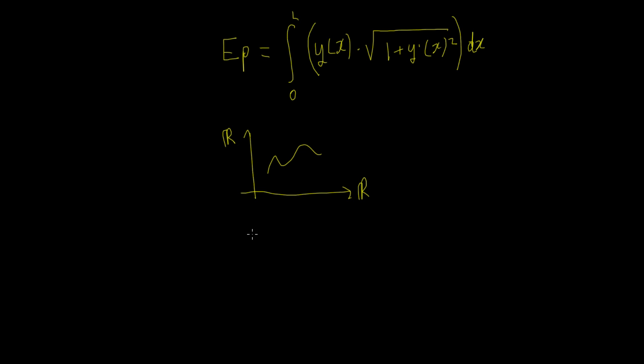But what we've got here, if we redraw this, up this axis we've got this value Ep. Right, Ep again is the real number line. But along this axis here, we don't have the real number line as the independent variable. What we have is functions.